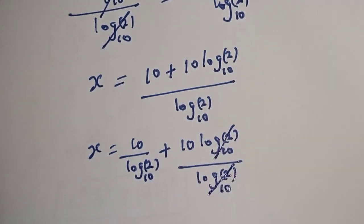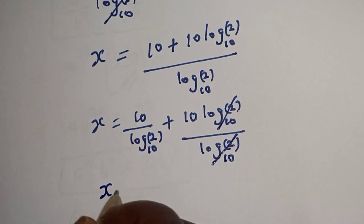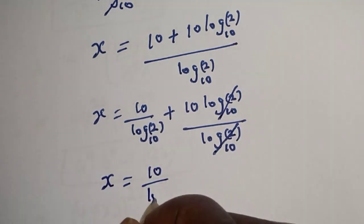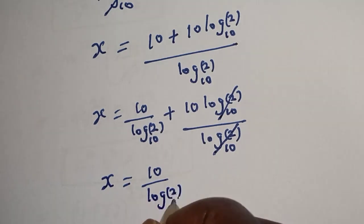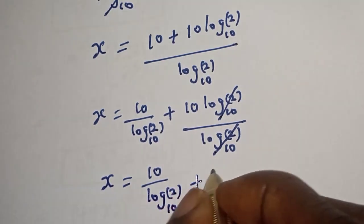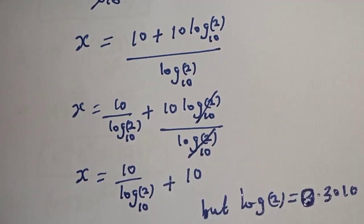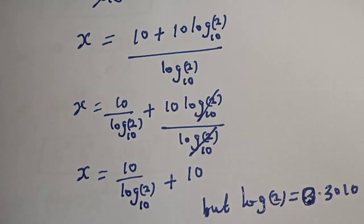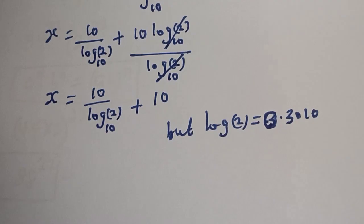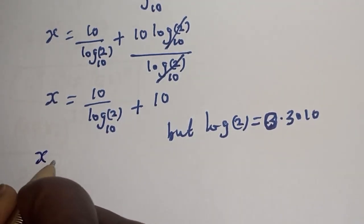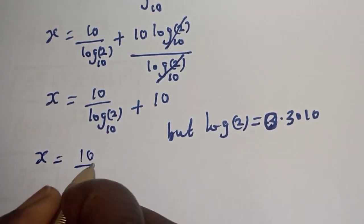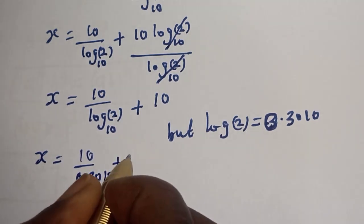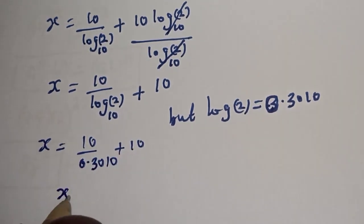This cancels, and x is equal to 10 over log 2 base 10 plus 10. But log 2 is equal to 0.3010.